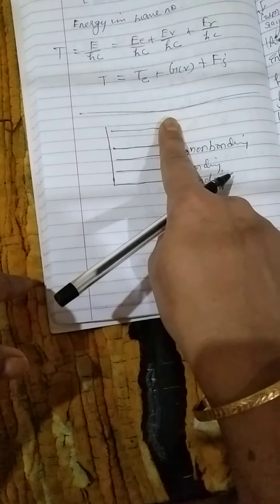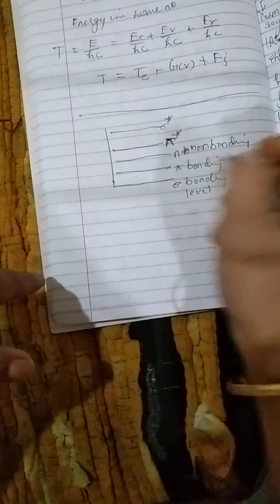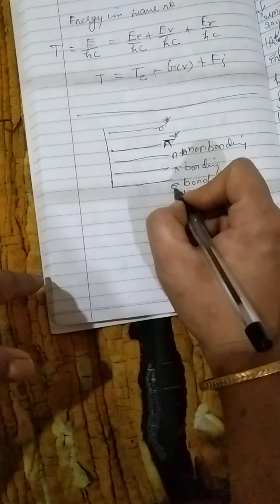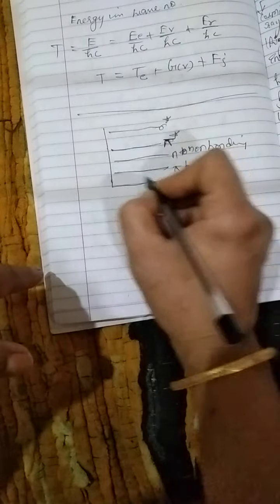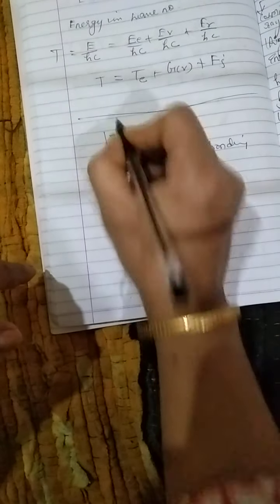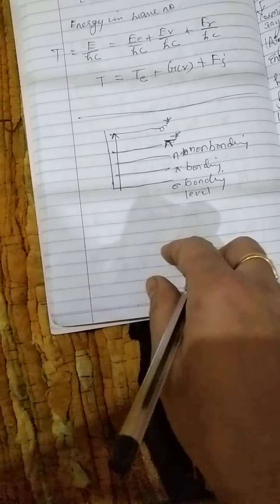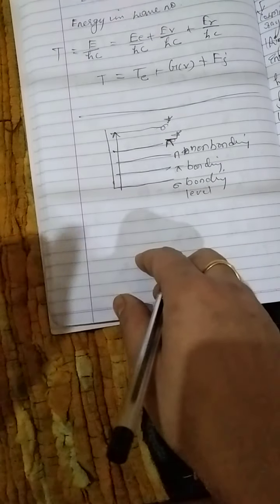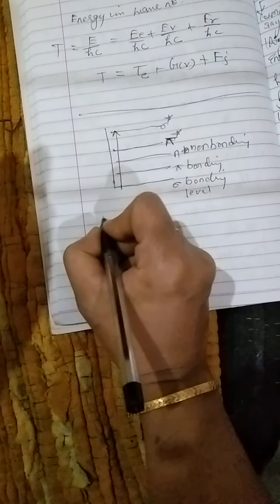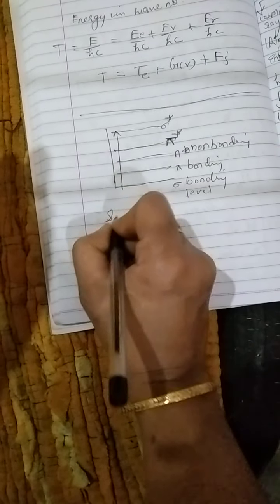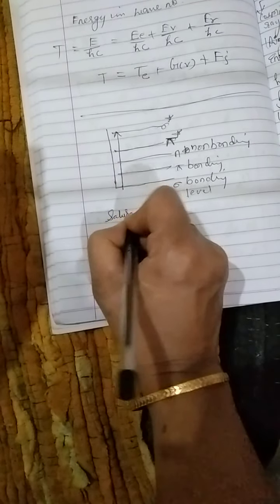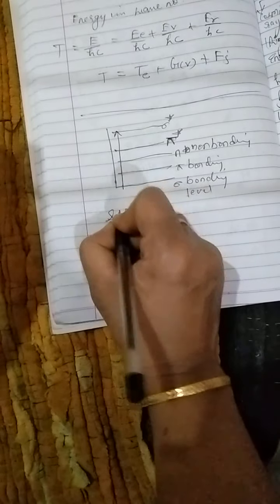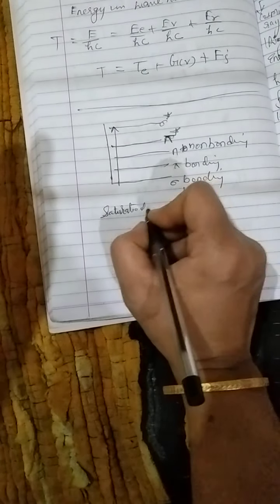Not all these levels are present in all compounds. I will tell you which levels are present in which compound. The sigma to sigma star transition and such type of levels are present in saturated compounds — compounds containing single bonds.